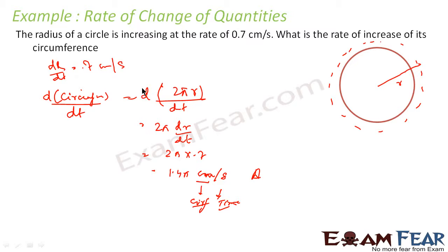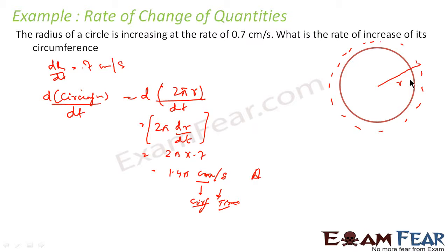This is a very simple question because we have dr/dt and we have to find the rate of change of circumference with respect to time. Please note: this result is independent of r — at any value of r the answer is the same because there is no r component in the expression. If you look at change of area or change of volume, in those cases there is an r component as well, so the rate of change of volume depends on the current value of r. But here, the rate of change of circumference is independent of r.